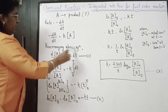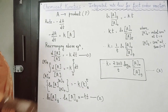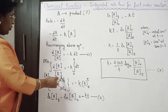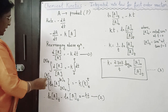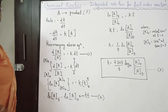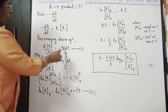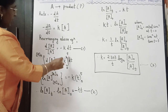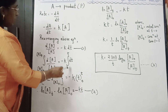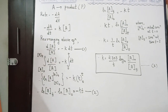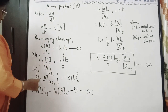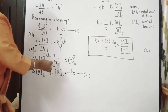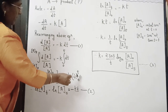Now we integrate equation number 1. On the left-hand side, d[A]/[A] is integrated within limits [A₀] to [Aₜ]. Since K is a constant, it is taken outside the integration sign, giving -K times the integral of dt within limits T = 0 to T = t. On solving, we get: ln[A] from A₀ to Aₜ equals -Kt from 0 to t.